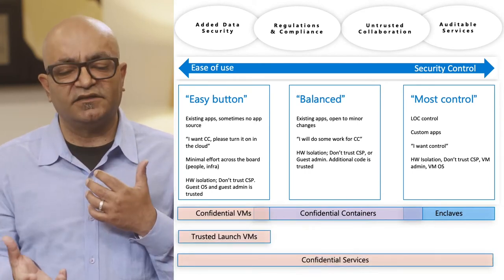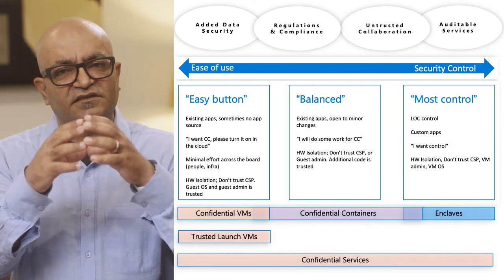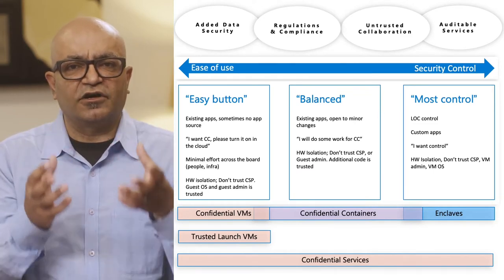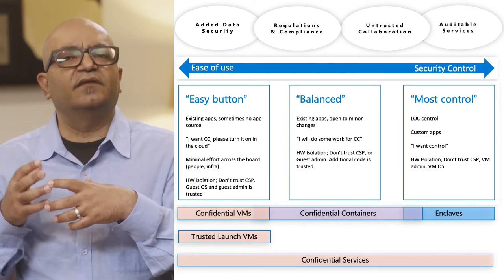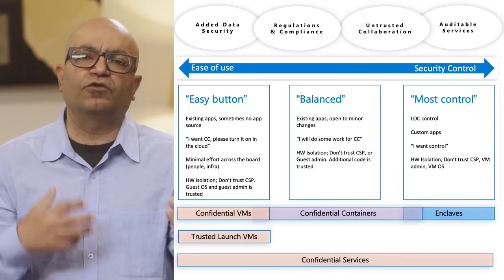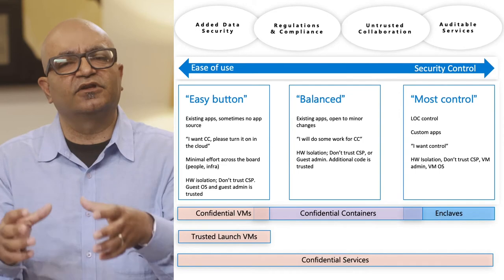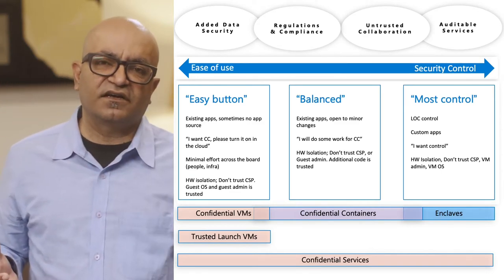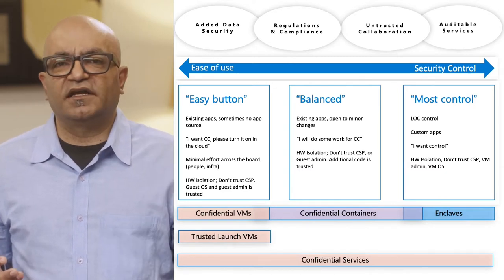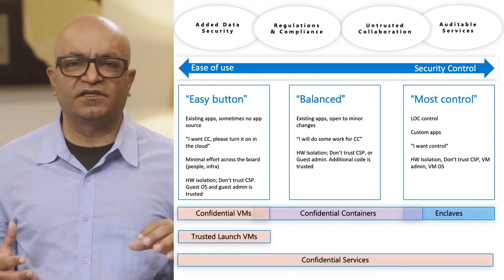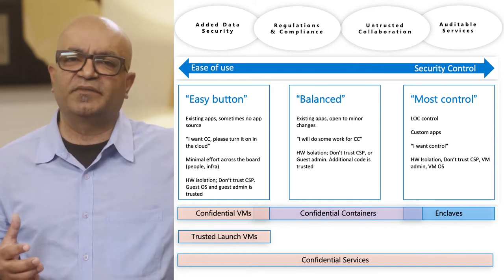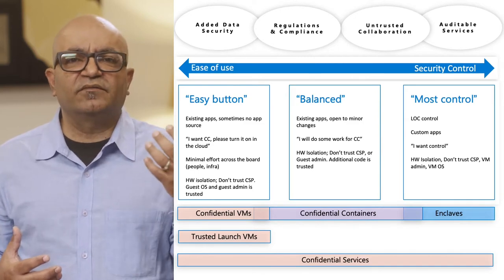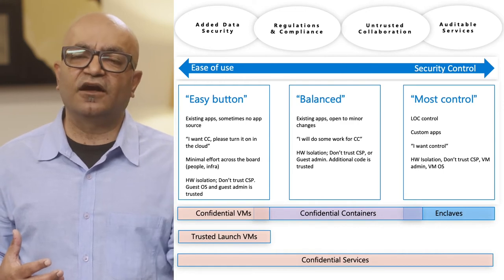Confidential containers on Intel SGX let you take your existing Docker container — whether in Python, Java, or .NET — wrap it with a LibOS-like offering available through open source or an ISV partner, and have it schedulable through Azure Kubernetes Service onto these enclaves. So you can now have your containers themselves be confidential. On the left side are the easy button customers: they have a line-of-business application that's been running well for five-plus years and don't want to make any changes. For them, we've enabled confidential virtual machines recently announced in preview.